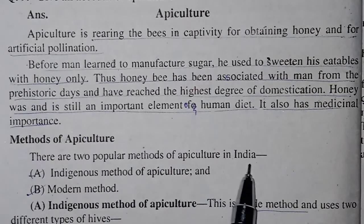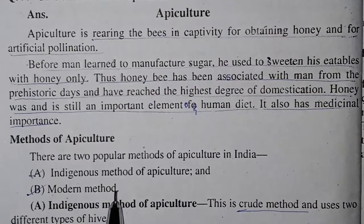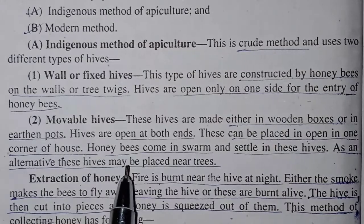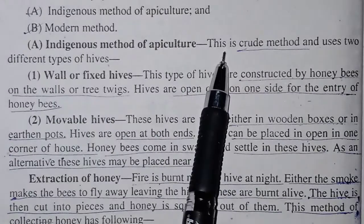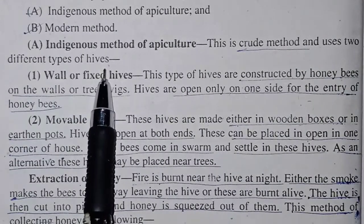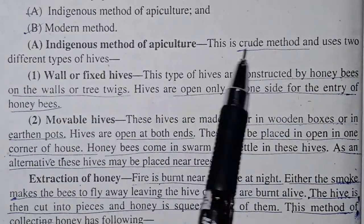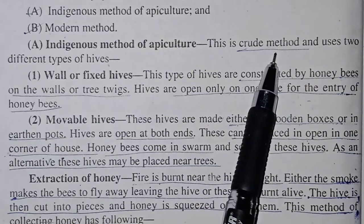Two popular methods of apiculture in India: first, our indigenous method of apiculture, and second, our modern method of apiculture. The indigenous method of apiculture is the crude method and uses different types of hives.